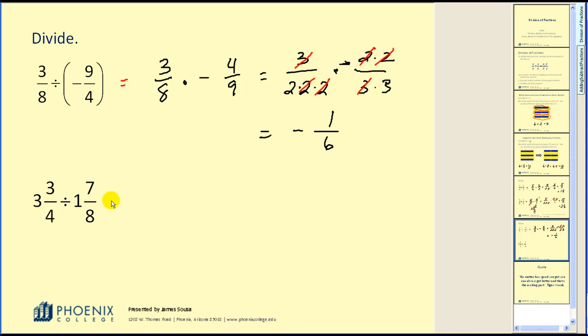Our last example introduces a mixed number. There's nothing special about this mixed number. The first thing we're going to do is convert it to an improper fraction. So 4 × 3 + 3, 15/4, divided by, looks like, 15/8. Converting this to a multiplication problem: 15/4 × 8/15.